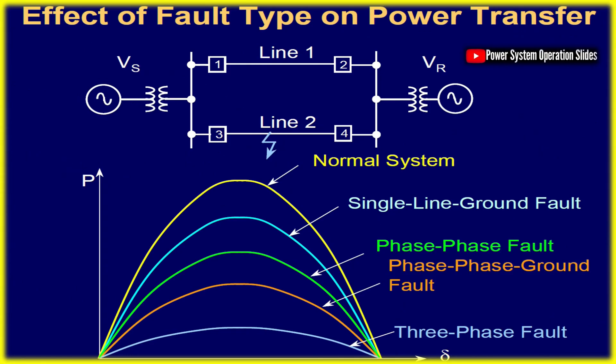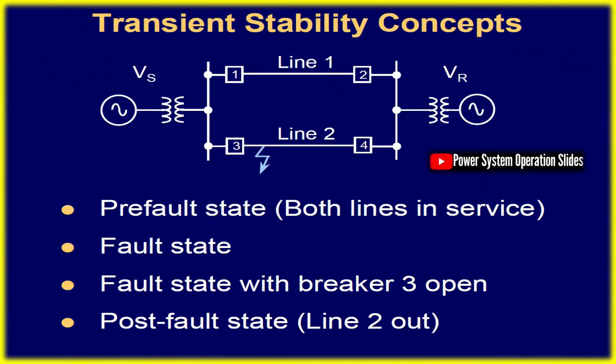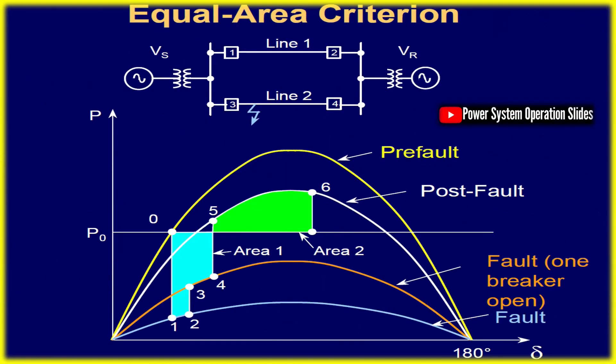OOS occurs when a generator loses synchronism with the system due to disturbances or automatic voltage regulator failures, leading to high peak currents, mechanical stress, and pulsating torques necessitating separation through OOS tripping relays.